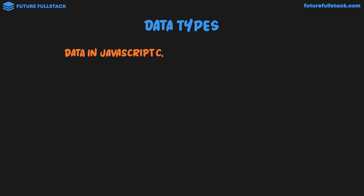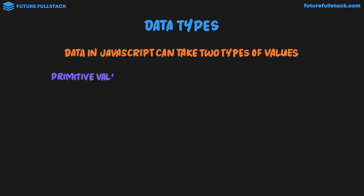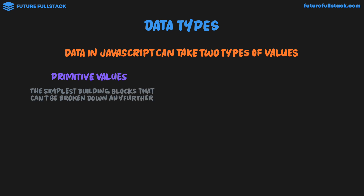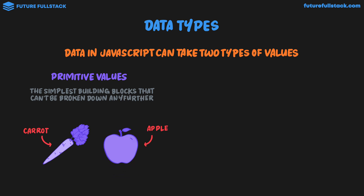Data in JavaScript can take two types of values. We have primitive values — the simplest building blocks that can't be broken down any further. In our juice bar analogy, think of an ingredient like a carrot or an apple. These can be sliced and diced, but a piece of apple is a foundational unit, like elements in the periodic table — take oxygen, for example. A fancy word we use to describe primitive values is immutable, which means they can't change.